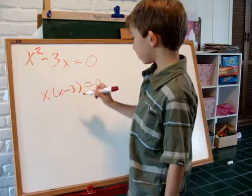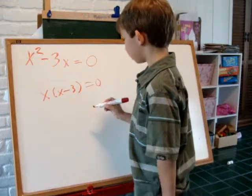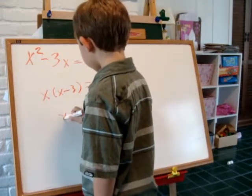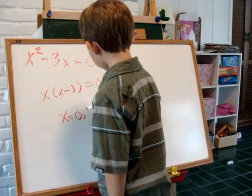You can easily see that 0 and 3 work out in this equation. x equals 0, 3.